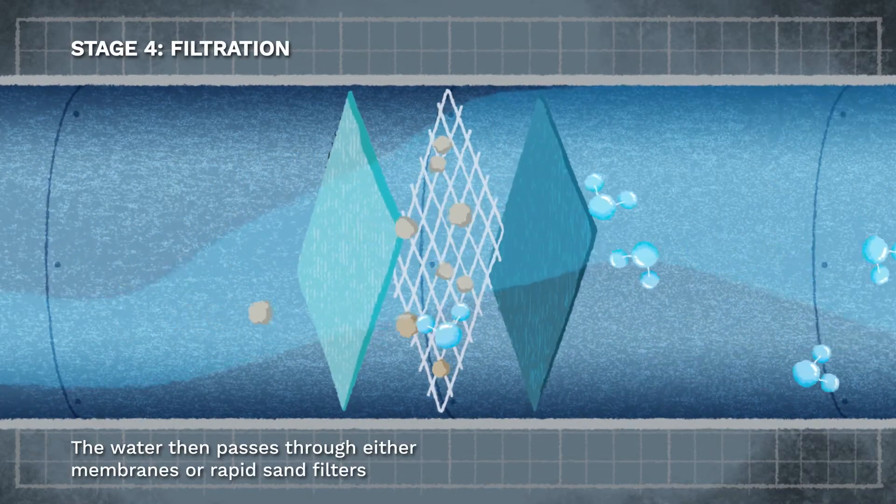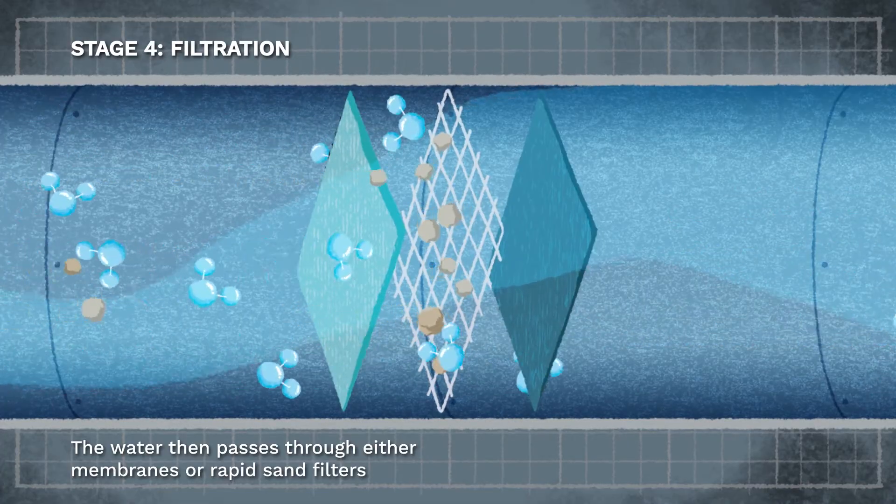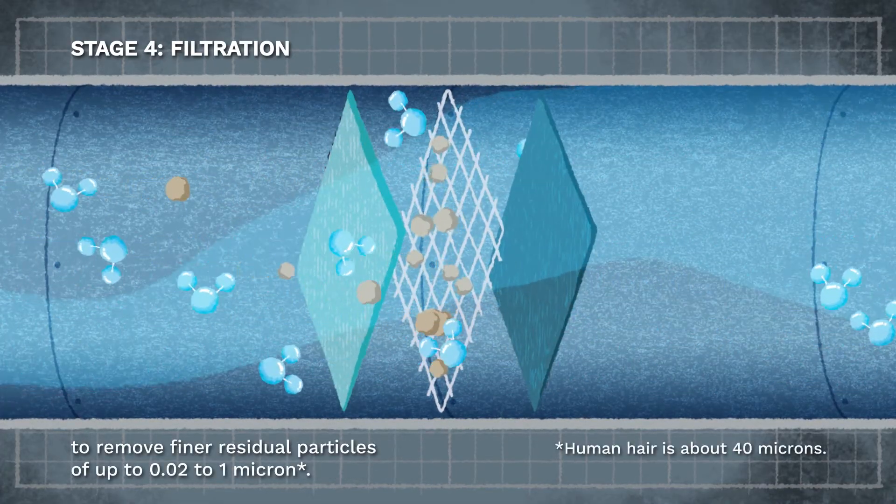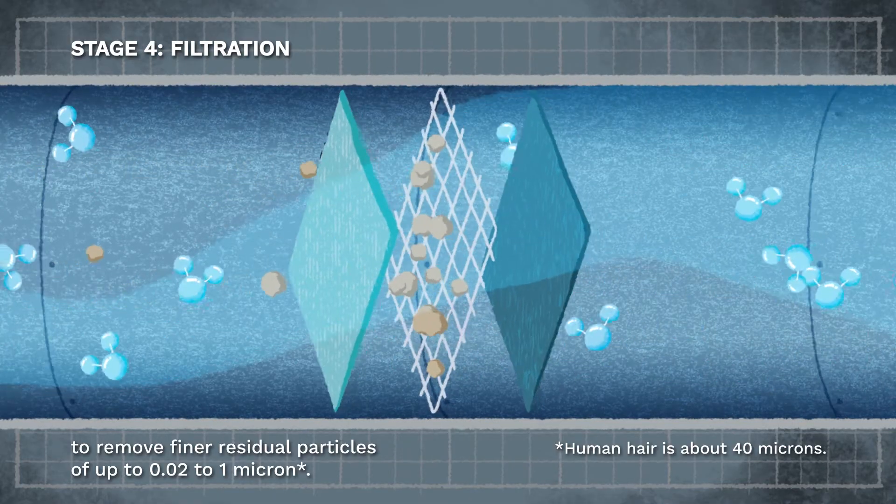The water then passes through either membranes or rapid sand filters to remove finer residual particles of up to 0.02 to 1 micron.